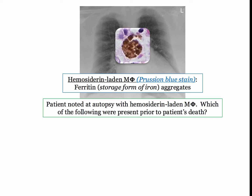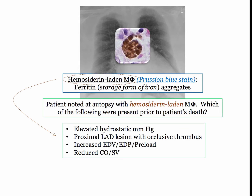Hemosiderin-laden macrophages may be described in a patient discovered either at autopsy or on lung biopsy. You will need to work backward to identify their significance, which can be identified by descriptions highlighting either the underlying pathophysiology or the pathologic basis for the reduced LV function. You can't answer these derivatives on test day if you don't identify the hemosiderin-laden macrophage as a consequence of LV failure.